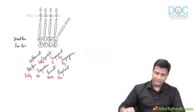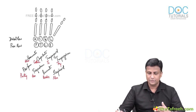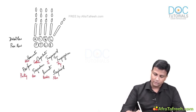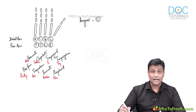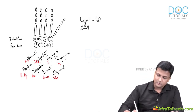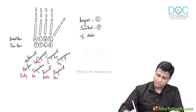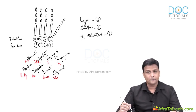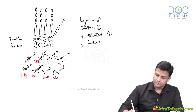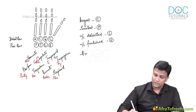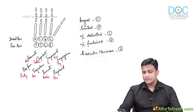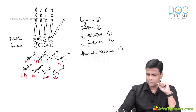Now let me highlight a few direct exam questions. Out of all eight carpal bones, the largest is capitate. The smallest carpal bone is pisiform. The most commonly dislocated carpal bone is lunate. The most commonly fractured carpal bone is scaphoid. And the carpal bone that undergoes avascular necrosis is also scaphoid.